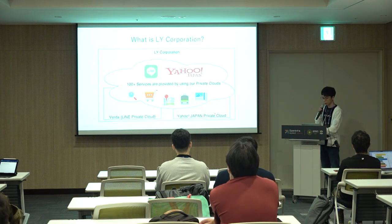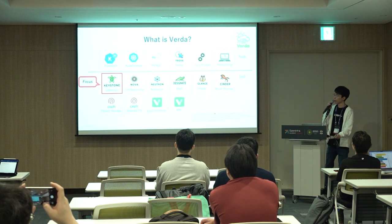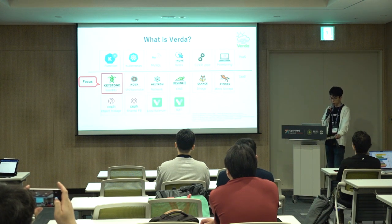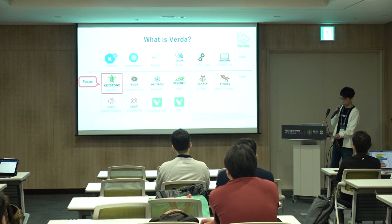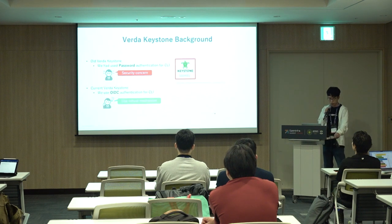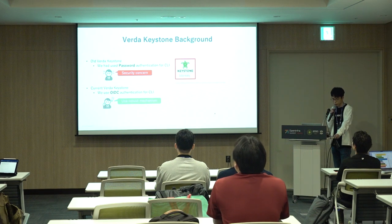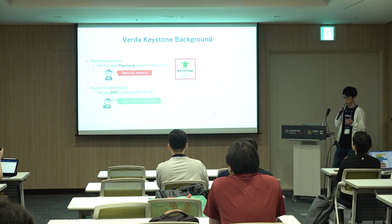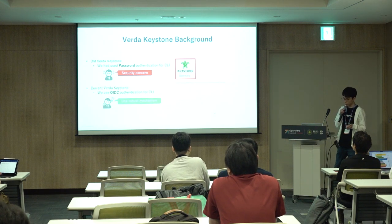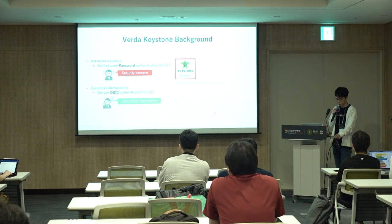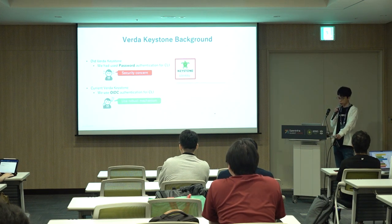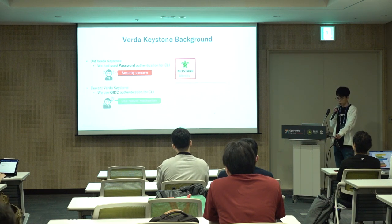Let me introduce VELDA. VELDA is a private cloud created by LINE. It provides both IaaS and PaaS services, and the IaaS within VELDA is built using OpenStack. Today's main topic is about Keystone. So far, we have been using password authentication for the CLI. However, there were several security concerns, such as weak passwords and password leaks. The current VELDA uses OIDC authentication instead of password for the CLI, and this OIDC authentication for the CLI is today's main topic.